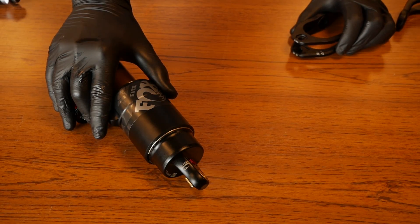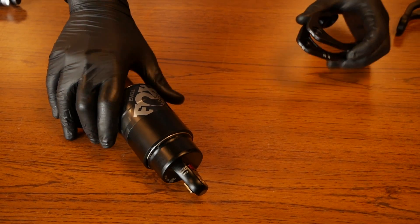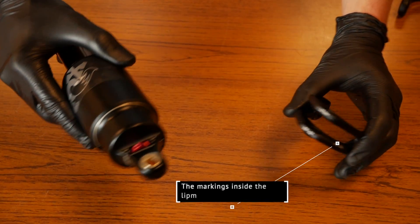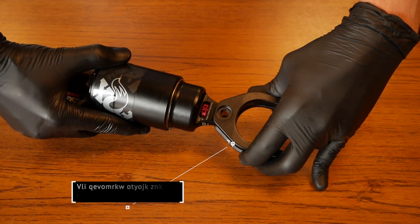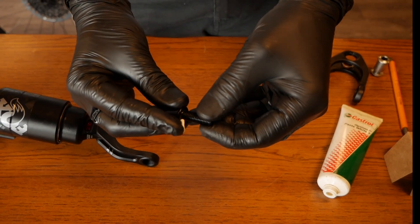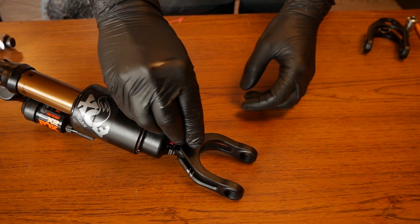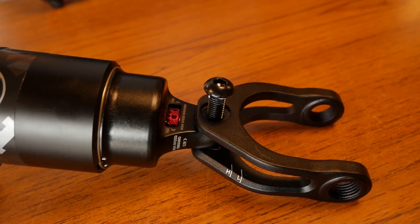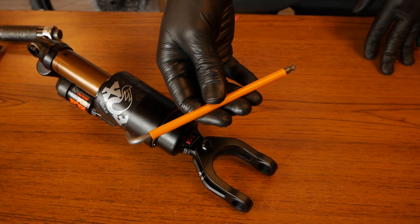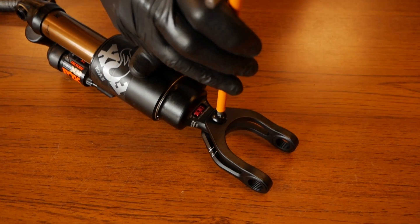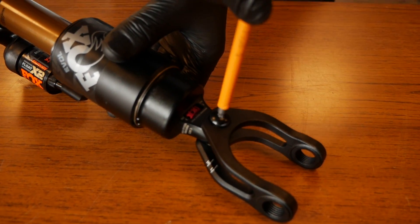The shock extender is then fitted to the shock. The markings inside the link confirm which way to fit the insert to get the high or low setting. Before securing in place with the supplied bolt, apply a small amount of grease to the bolt. Now using your 6mm allen key, fit the bolt as indicated, tightening to 15 newton meters.